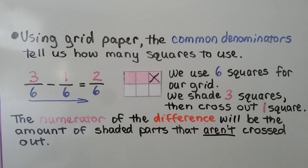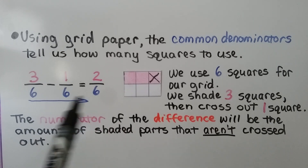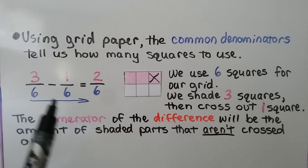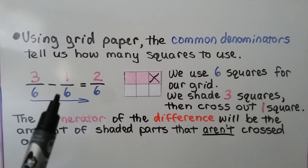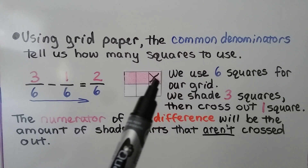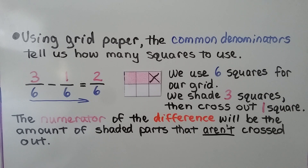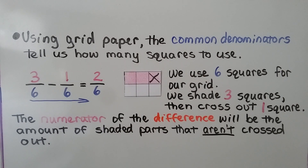Using grid paper, the common denominators tell us how many squares to use. We have 6 squares for our grid — there's a 6 denominator. We shade 3 squares, and because we're taking away 1 sixth, we cross out 1 square. The numerator of the difference will be the amount of shaded parts that aren't crossed out: 2 sixths.